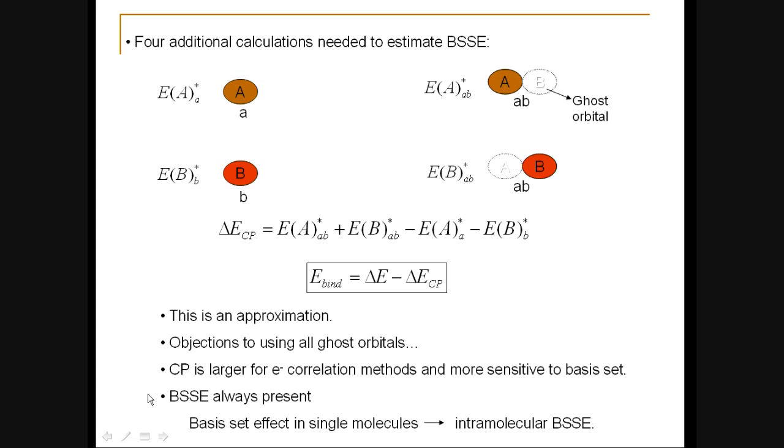An example of that would be two conformers, where you can think of a case, let's say, some linear molecule, and then another conformation of the same molecule, which is, let's say, more or less more compact, I should say.